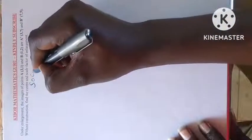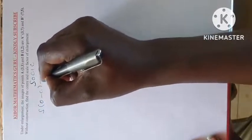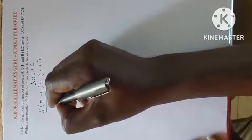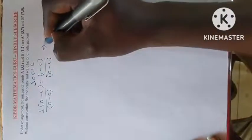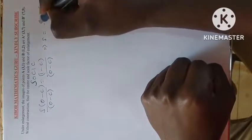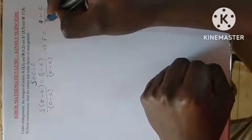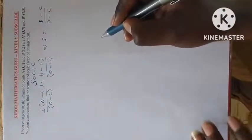My formula that I will be using is SOSIC. The formula is: scale factor into brackets (object minus center) is equivalent to (image minus center). If I divide both sides by (object minus center), then the scale factor is given by (image minus center) over (object minus center). That is our formula.